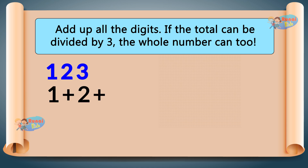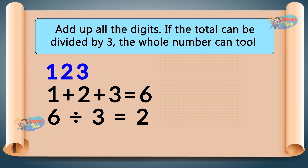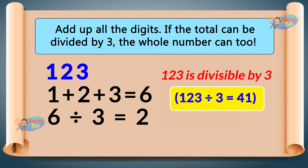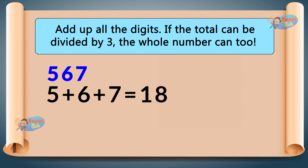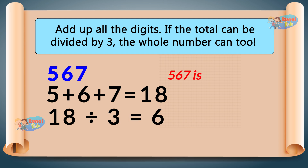123 — 1 plus 2 plus 3 equals 6. Since 6 divided by 3 equals 2, 123 is divisible by 3. 123 divided by 3 equals 41. 567 — 5 plus 6 plus 7 equals 18. Since 18 divided by 3 equals 6, so 567 is divisible by 3.